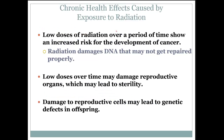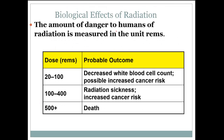Low doses of radiation over a period of time show an increased risk of development of cancer. Radiation damages DNA that cannot get repaired properly. Low doses over time may also damage reproductive organs, which may result in infertility, and could damage reproductive cells in ways that lead to genetic defects in offspring. So there are positives and there are negatives — there are trade-offs and it all depends on the risks and being able to weigh them.